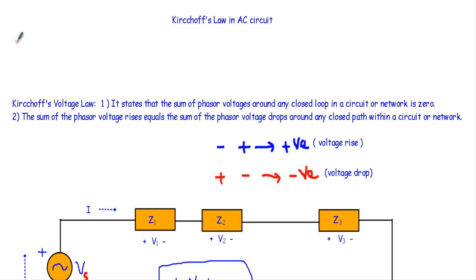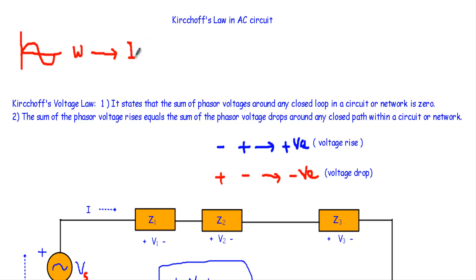If we have an AC circuit, we will apply one or more sinusoidal voltages as our voltage source. That sine wave will have an angular frequency of W. In that case, the other voltages and currents in that circuit — denoted as I and V — will also be sinusoidal having the same angular frequency W.